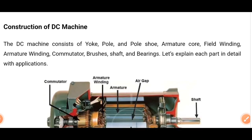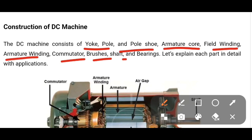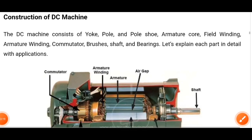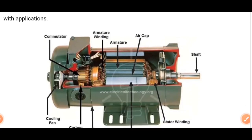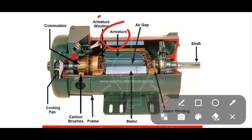The DC machine consists of: yoke, pole, pole shoe, armature core, field winding, armature winding, commutator, brushes, shaft, and bearings. These are the main constructive parts of the DC machine. You can see in this diagram — this is the complete structure of the DC machine with internal parts clearly shown.